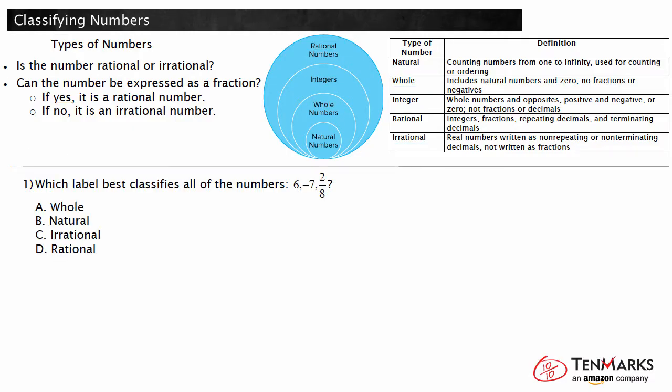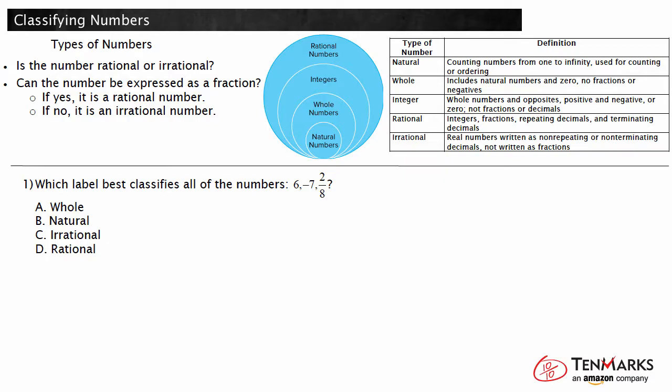Let's look at an example. Which label best classifies all of the numbers 6, negative 7, and 2 eighths? We need to find a group that classifies all these numbers. We know that all numbers are either rational or irrational. A rational number can be expressed as a fraction, and the decimal form of the number will terminate or repeat. Integers and whole numbers are also examples of rational numbers. The numbers 6 and negative 7 are both integers, so they must also be rational numbers. Can fractions be rational numbers? Yes, fractions can be rational numbers as long as the decimal form terminates or repeats.